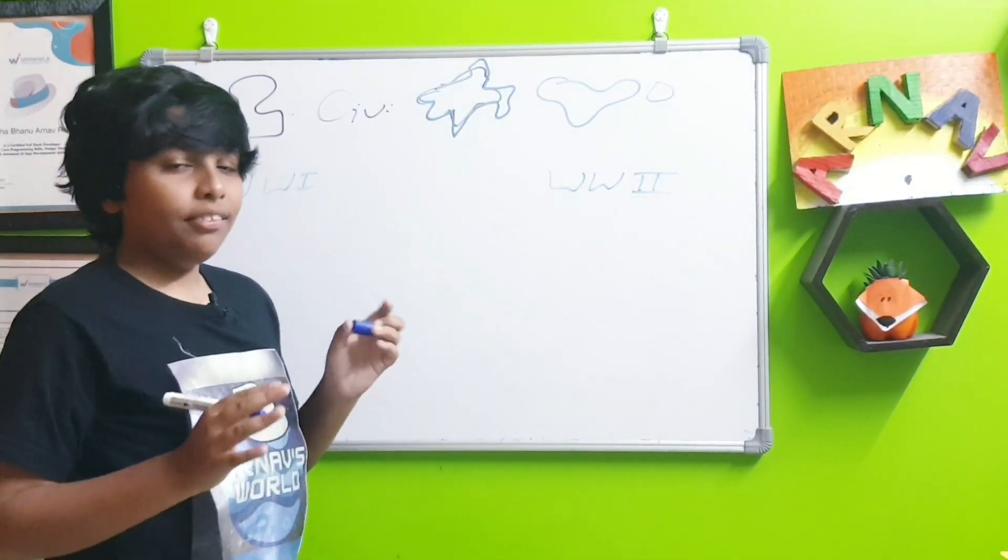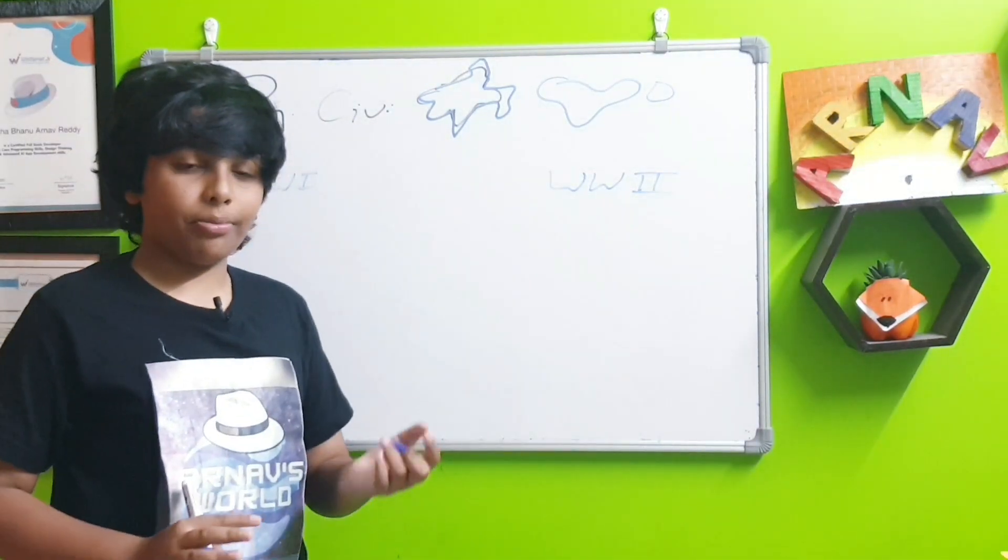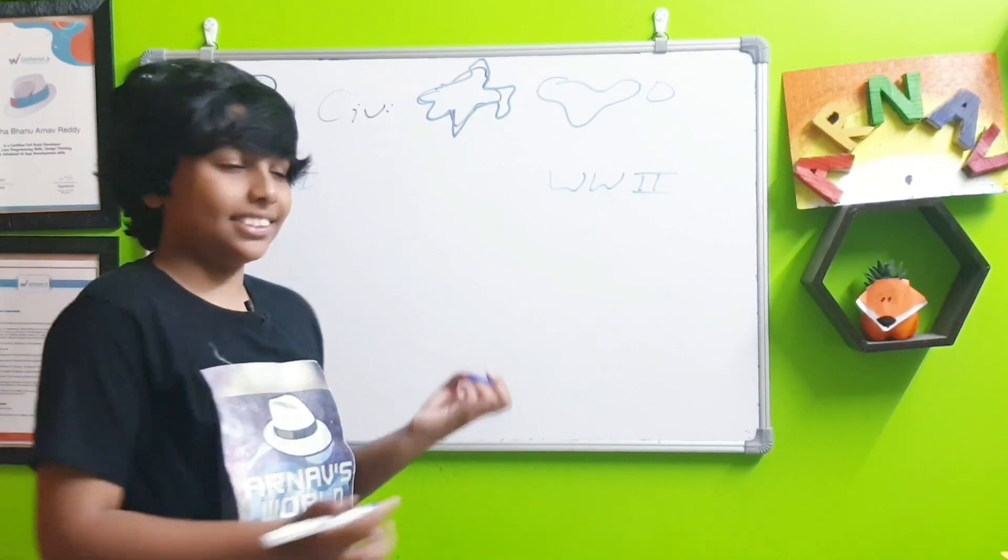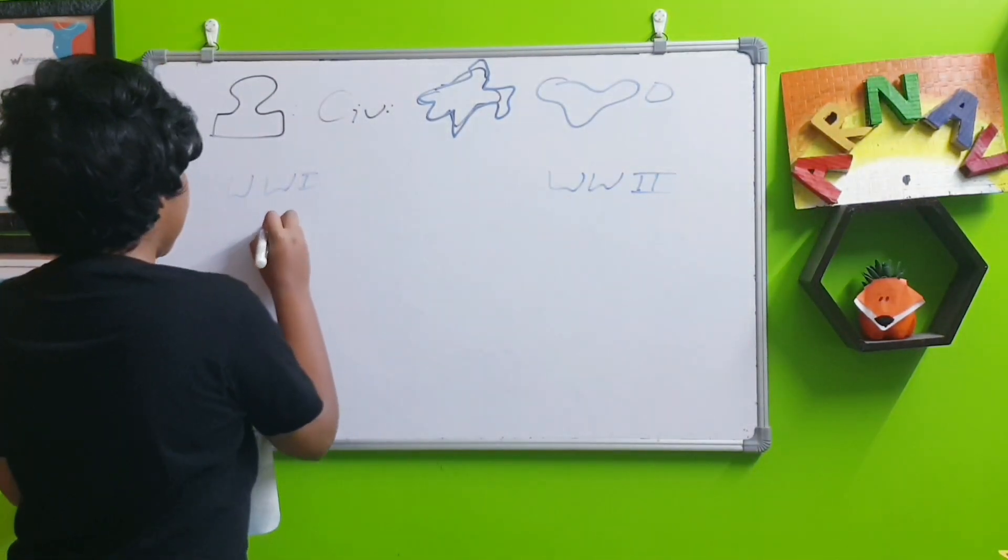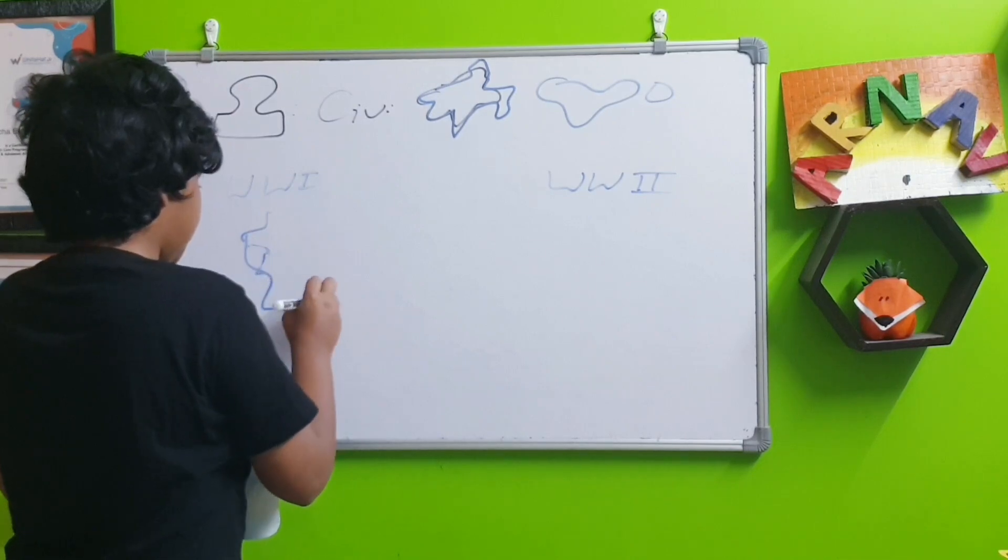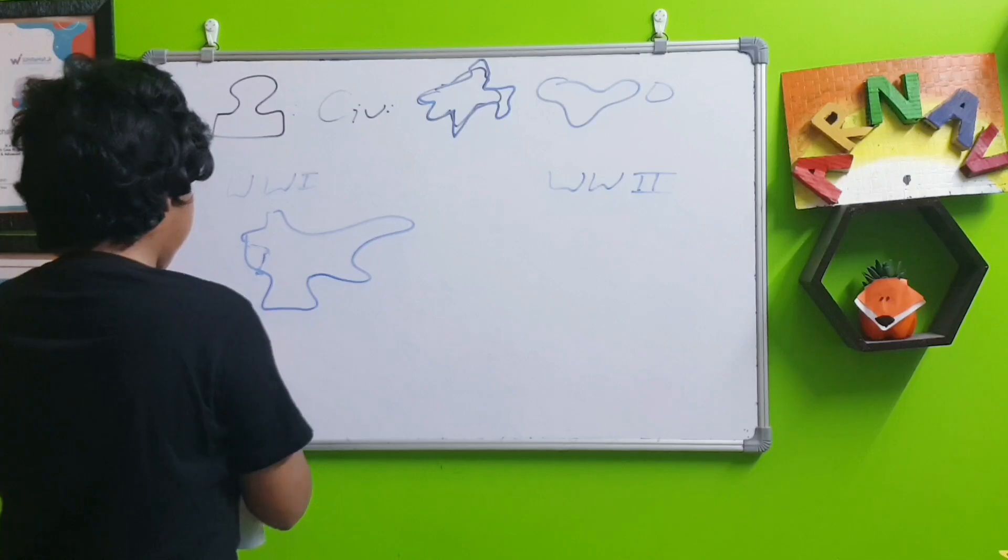So in World War 1, we kind of just discussed. First there was only one video about World War 1. But then we discussed about some territorial changes. For example, territorial changes of the German Empire. It's pretty hard to draw in quick time.